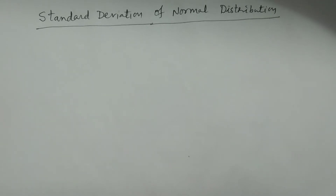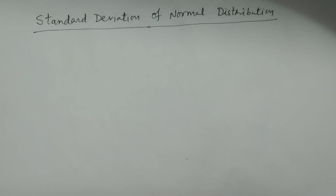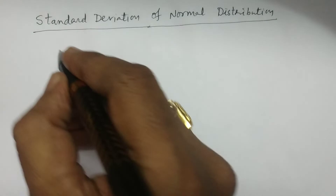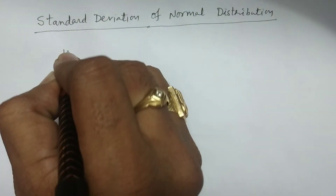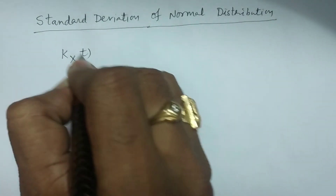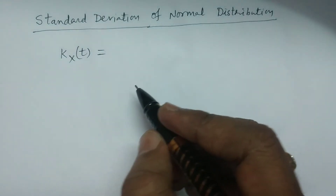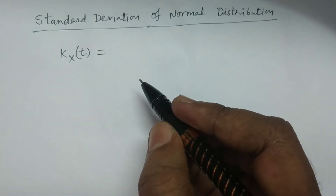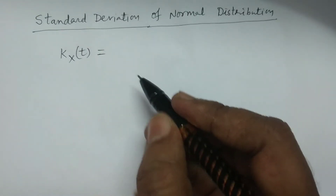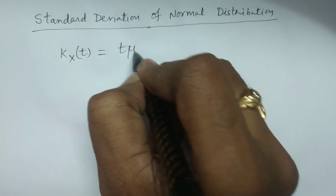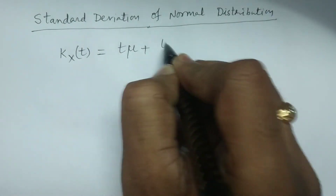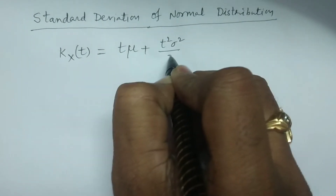The variance of the normal distribution is going to be calculated by considering the cumulant generating function. The cumulant generating function K_X(t) of the normal distribution is t·μ plus t²·σ²/2.